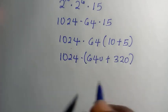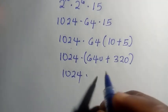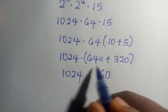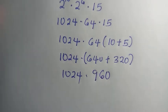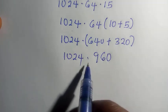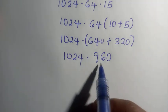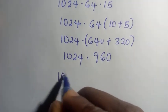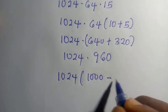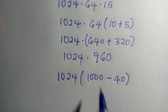Adding 640 plus 320 gives us 960. So we now have 1024 multiplied by 960. We then re-express 960 as 1000 minus 40, so we have 1024 multiplied by the bracket 1000 minus 40.